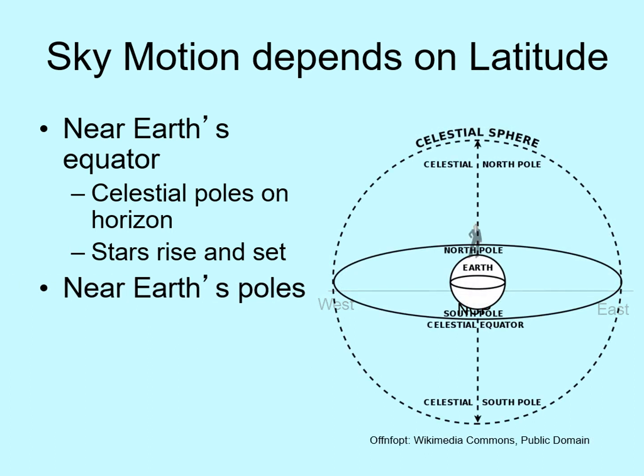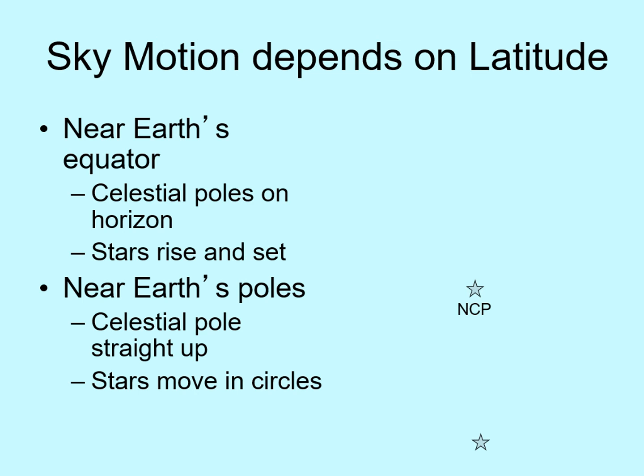Now let's change our viewpoint so that we're standing on the north pole. Here, the north celestial pole is straight over our heads. Once again, stars will appear to rotate around this point, but now we aren't looking anywhere near the horizon — so stars just go in circles above us. Even when we do look close to the horizon, the stars will still be moving parallel to the ground, all around us in a circle. There is a fairly bright star that is very close to the north celestial pole: Polaris, the north star. Polaris isn't the brightest star in the sky, but it's important because it stays stationary even as everything else in the sky rotates around it. So at the poles, stars don't rise and set — they just move in circles in the sky.